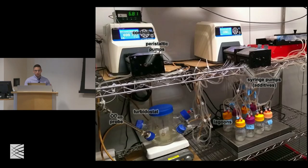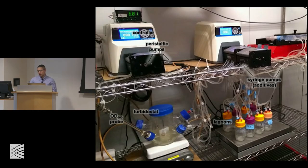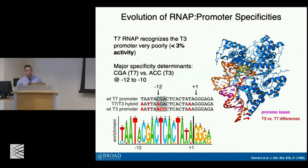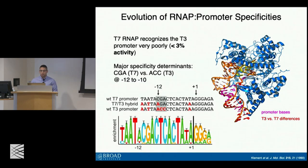We can hook up syringe pumps to add any number of additives, including chemical mutagens. In our case, our mutagenesis plasmid is inducible by a small molecule arabinose, which allows us to circumvent many of the issues with chemical mutagens while introducing robust mutations in the gene of interest.